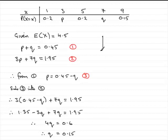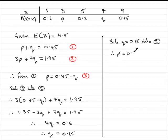Then we substitute the q value in. Substituting q equals 0.15 into equation 3, we get p equals 0.45 minus 0.15, which equals 0.3.